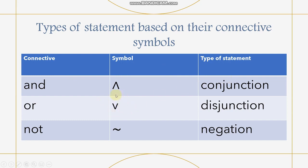So if this is the V-shape symbol (∨), this stands for 'or', and the type of statement is disjunction. And this symbol (¬) means 'not', and the type of statement is negation.